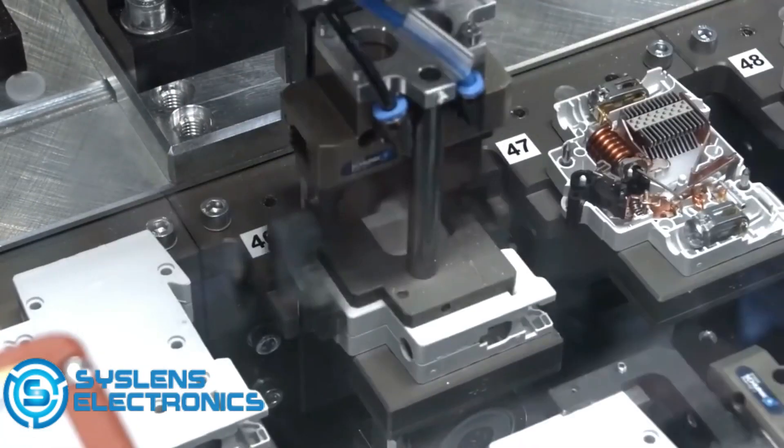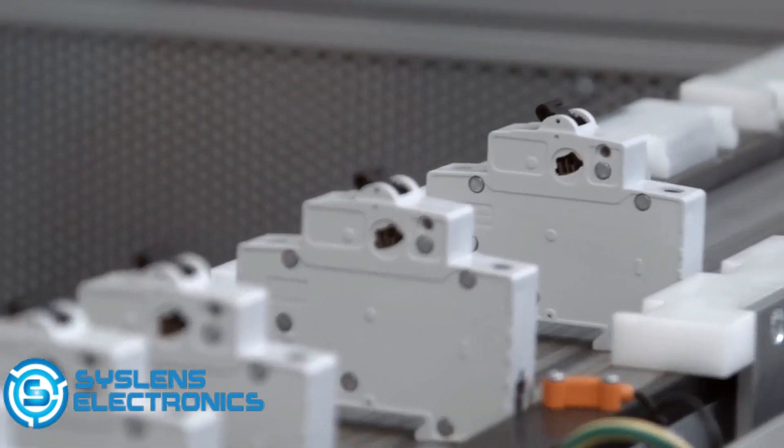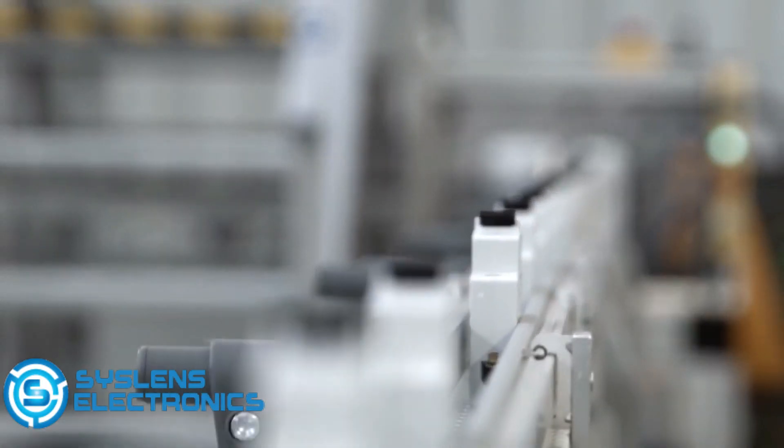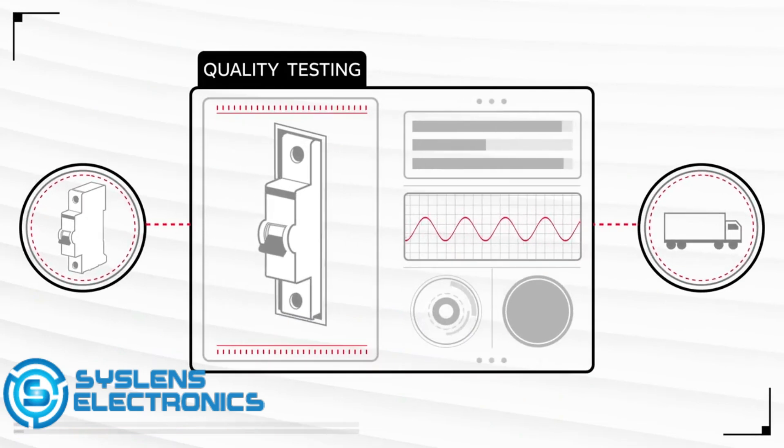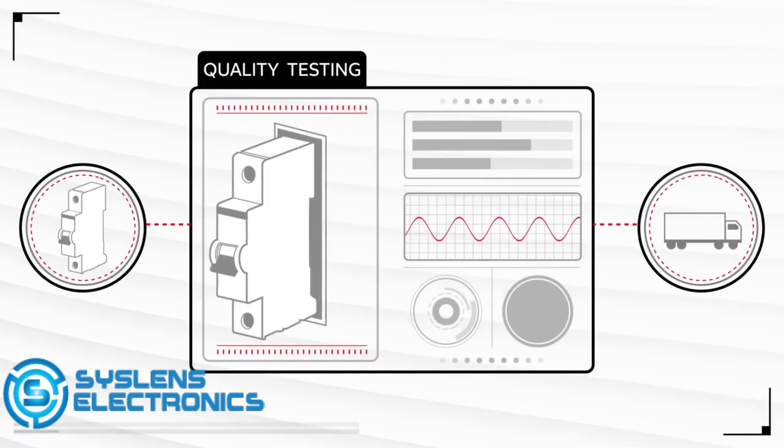Each circuit breaker has a unique QR code, which enables full traceability from the factory to where it's installed. And every product is tested before leaving the factory to ensure the highest quality.